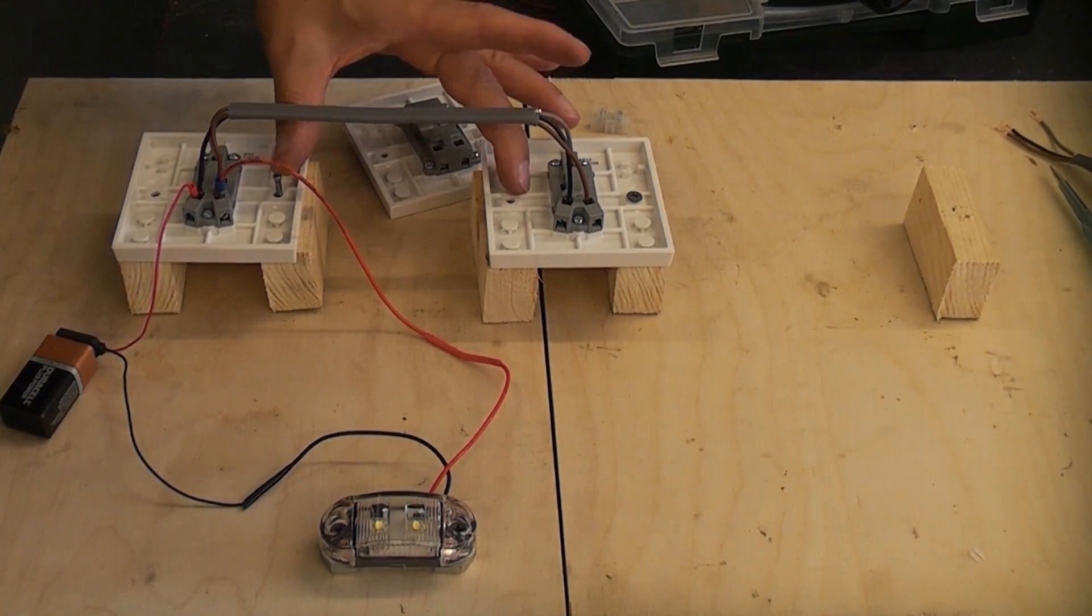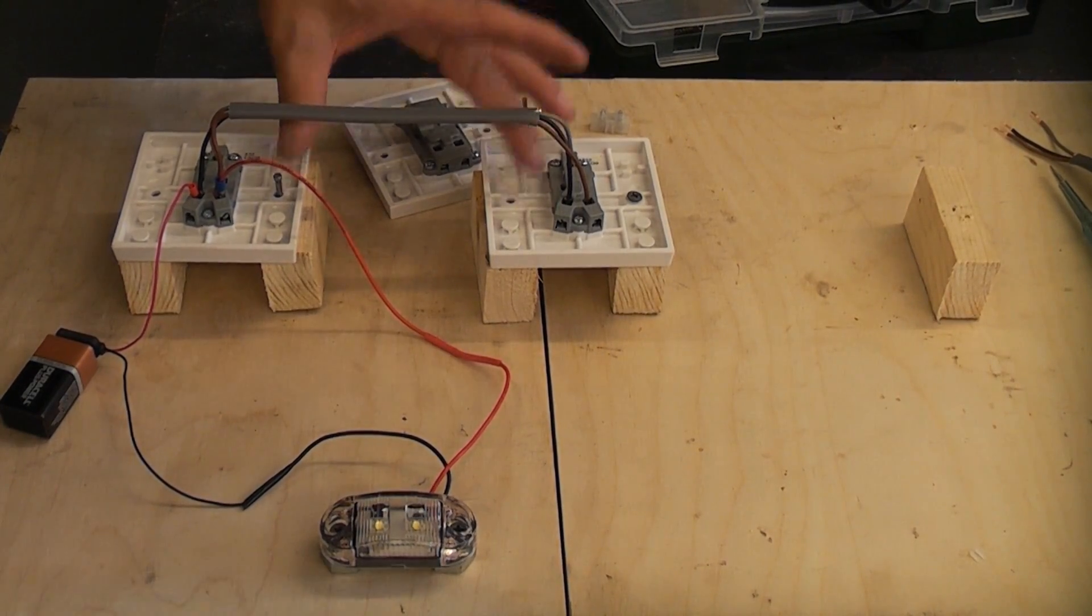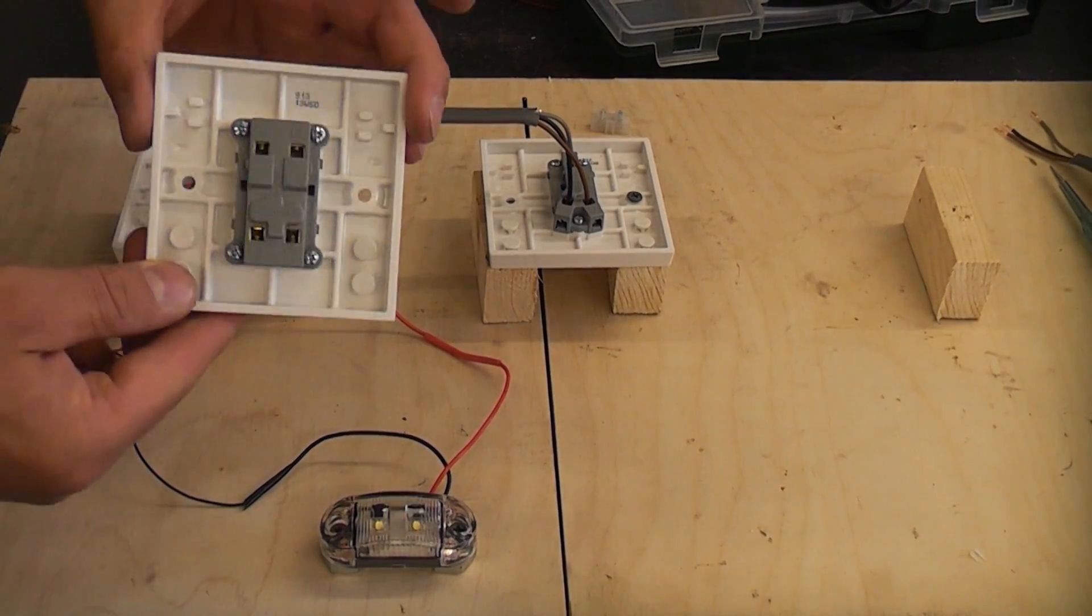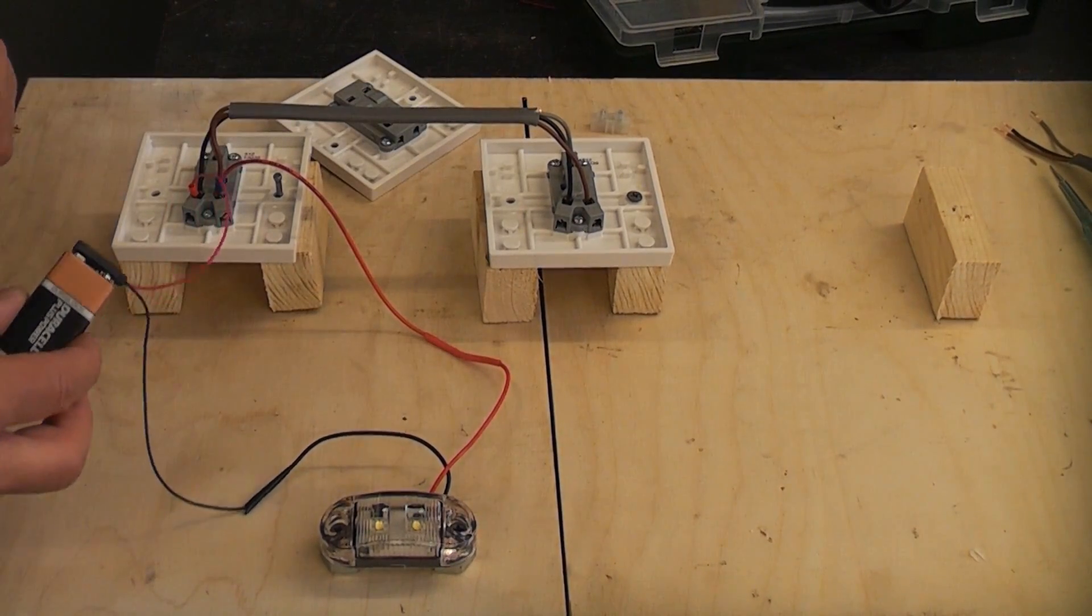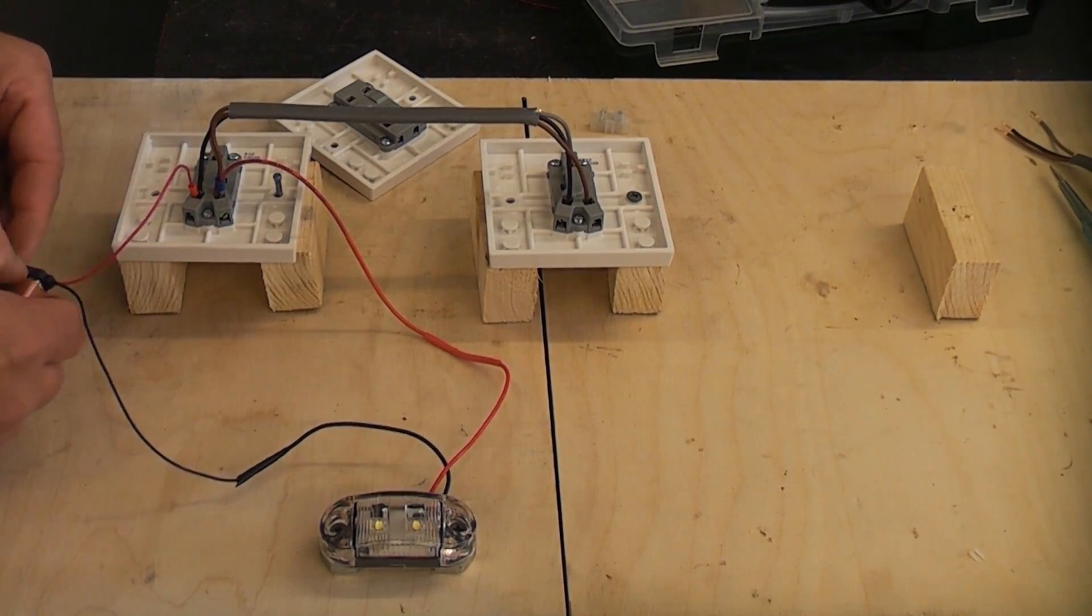So we're now going to make this two-way lighting arrangement a three-way arrangement by adding the intermediate switch. So I'm going to start off by disconnecting the power supply which in this case is the battery.